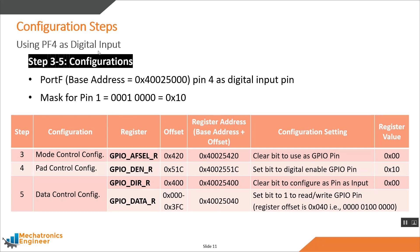For Port F Pin 4, used as a digital input, the base address of Port F is noted and the mask for pin 4 is hex 0x40. We set the alternate function select register to 0x00, and in the digital enable register we set only pin 4 to one. In the GPIO direction register we write 0x00 since pin 4 is an input, so that bit is cleared. The offset for the GPIO data register is hex 0x040, and its address is calculated by adding this offset to the base address of Port F.